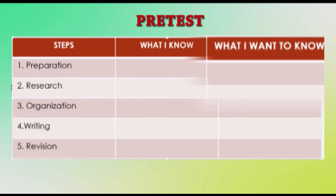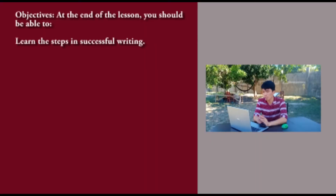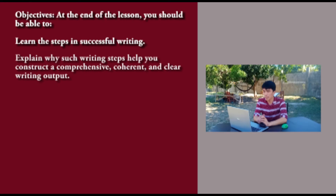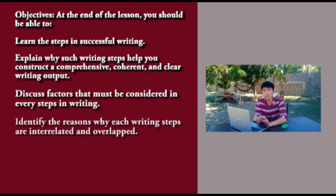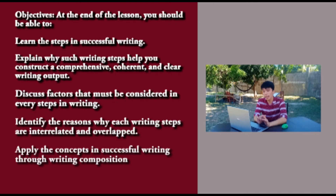You may add additional rows if necessary. Objectives: At the end of the lesson, you should be able to learn the steps in successful writing, explain why such writing steps help you construct a comprehensive, coherent, and clear writing output, discuss factors that must be considered in every step in writing, identify the reason why each writing step is interrelated and overlaps, and apply the concepts in successful writing through writing composition.